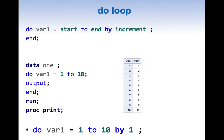Now let's look into the first one, which is do loop. In this presentation we're going to use do loop only for generating numbers. The syntax of simple do loop is straightforward: it starts with do, then you have index variable equals start to end by increment, and the do loop ends with an end statement.